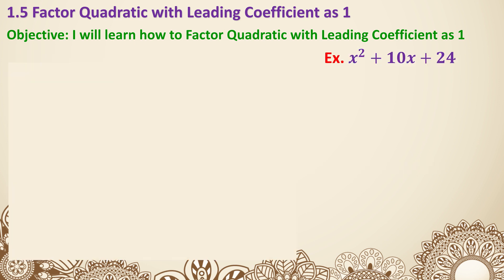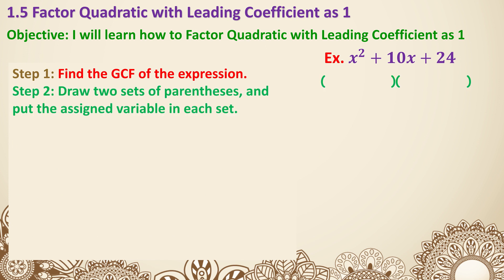Now let's move on to an example with some steps: x squared plus 10x plus 24. The first step whenever we do any kind of factoring is to check if there's a GCF, because that can sometimes simplify the process. Next, we already know quadratics are going to be factored into two parentheses — they will always be broken down into two parentheses if possible.